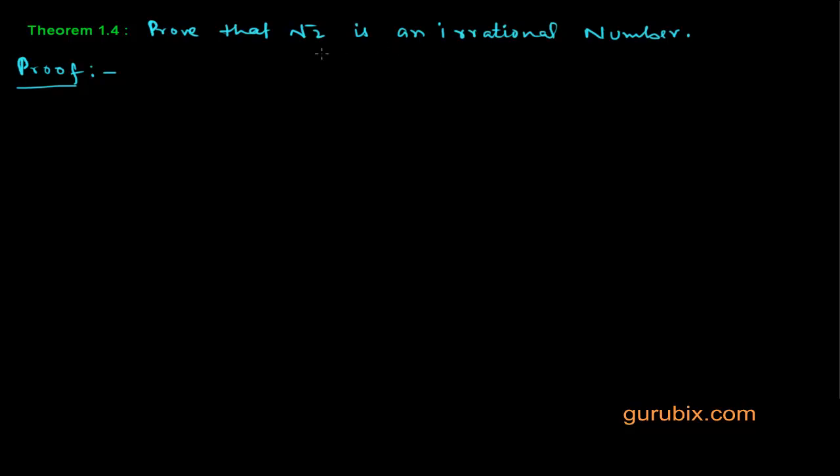We know that √2 is an irrational number, but how can we prove it? Let me try to make you understand the proof of this theorem. First, let √2 be a rational number, on the contrary.